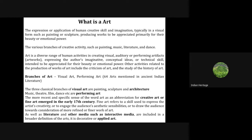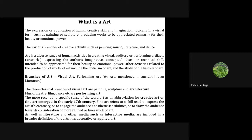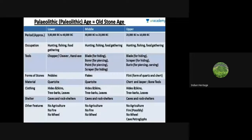Art is a diverse range of human activities. As per western theories, branches include visual art and performing art. In ancient Indian literature, 64 types of arts are mentioned. Today's classification identifies three classical branches of visual art: painting, sculpture, and architecture; and performing arts including music, theater, film, and dance. The term 'fine art' emerged in the early 17th century in western civilization. Literature and interactive media are included in broader definitions. Digital art can also be included today.